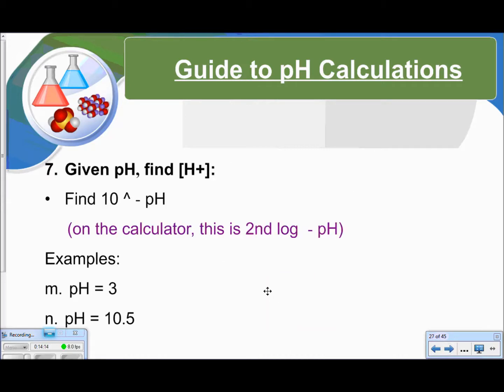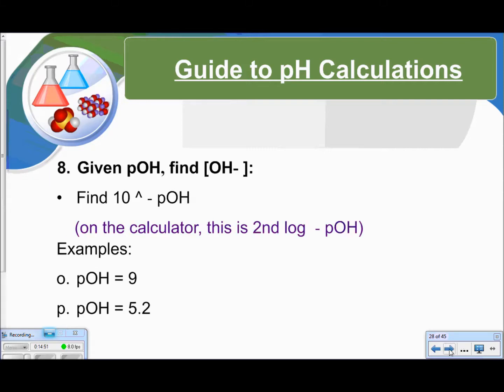Now if you're given the pH and you want to find the hydrogen ion concentration, then you actually do the opposite. On the calculator, you're going to hit second button log, and then put in the negative pH. So in this example, we'll do second log negative 3. And we get a hydrogen ion concentration of 1.0 times 10 to the negative 3. And if we do the same for N, we're going to get 3.16 times 10 to the negative 11. Notice here I've rounded to 3 sig figs because my pH was given in 3 sig figs. Go ahead and pause the video and try to solve for the hydroxide ion concentrations of these. Welcome back. Check your answers and see how you did.